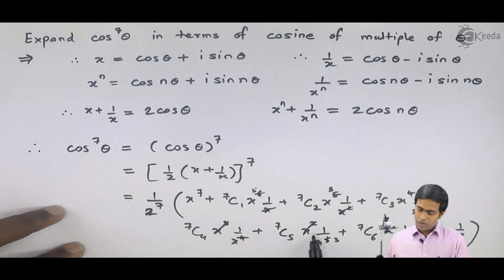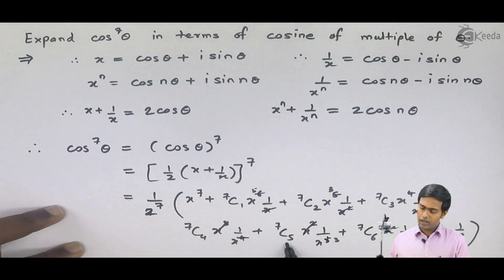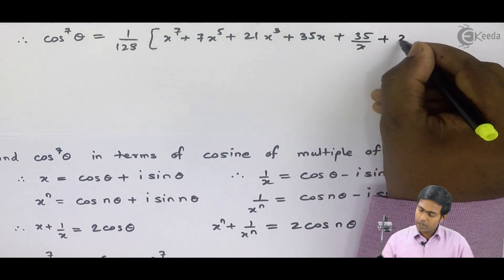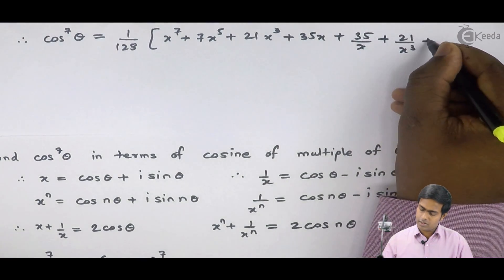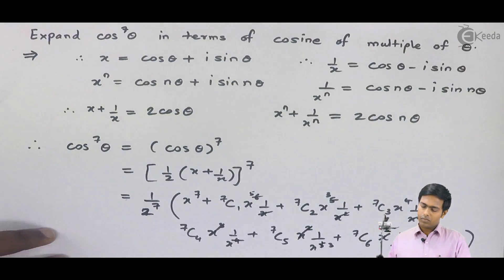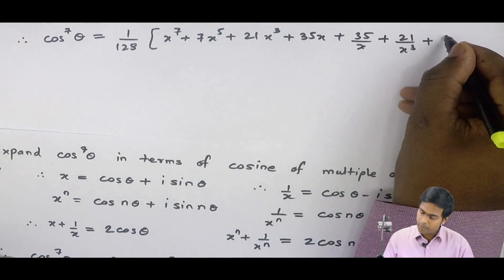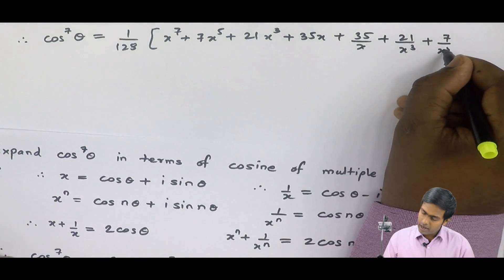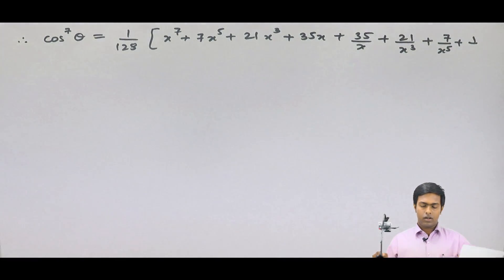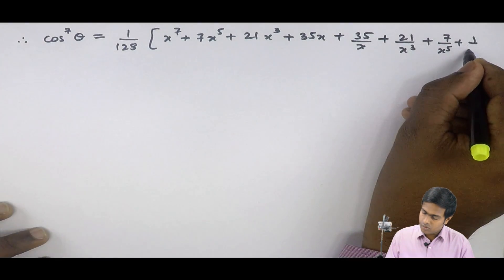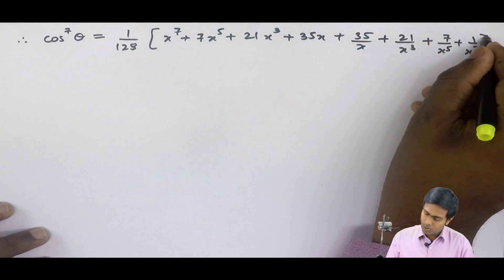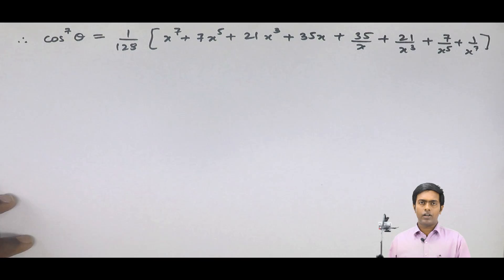Next term, 7C5 gives again 21, so we get 21 over x cubed. Next term, 7C6 gives 7 times 1 over x raised to 5, so 7 over x raised to 5. And the last term gives 1 over x raised to 7.